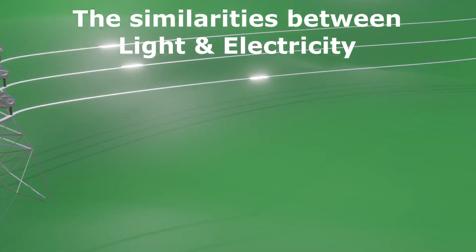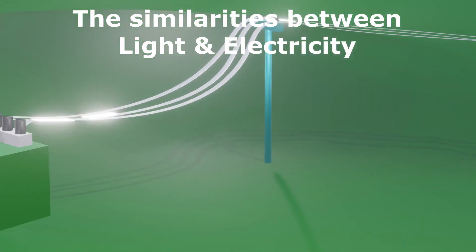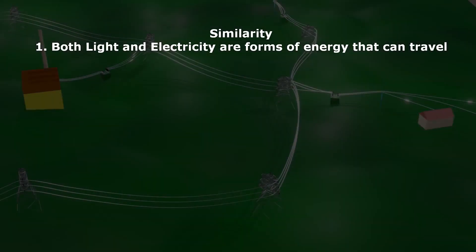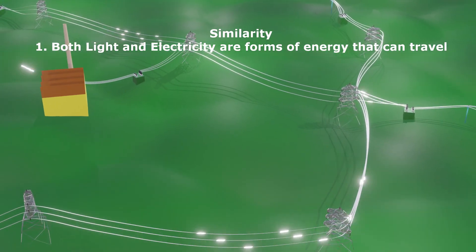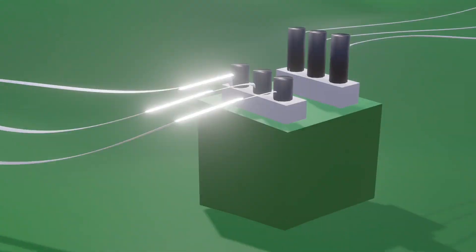Light and electricity share some interesting similarities and differences. Let's begin by looking at some of the similarities between light and electricity. Firstly, both light and electricity are forms of energy that can travel through space. Just like how electricity can be transmitted through wires, light can travel through space as waves.